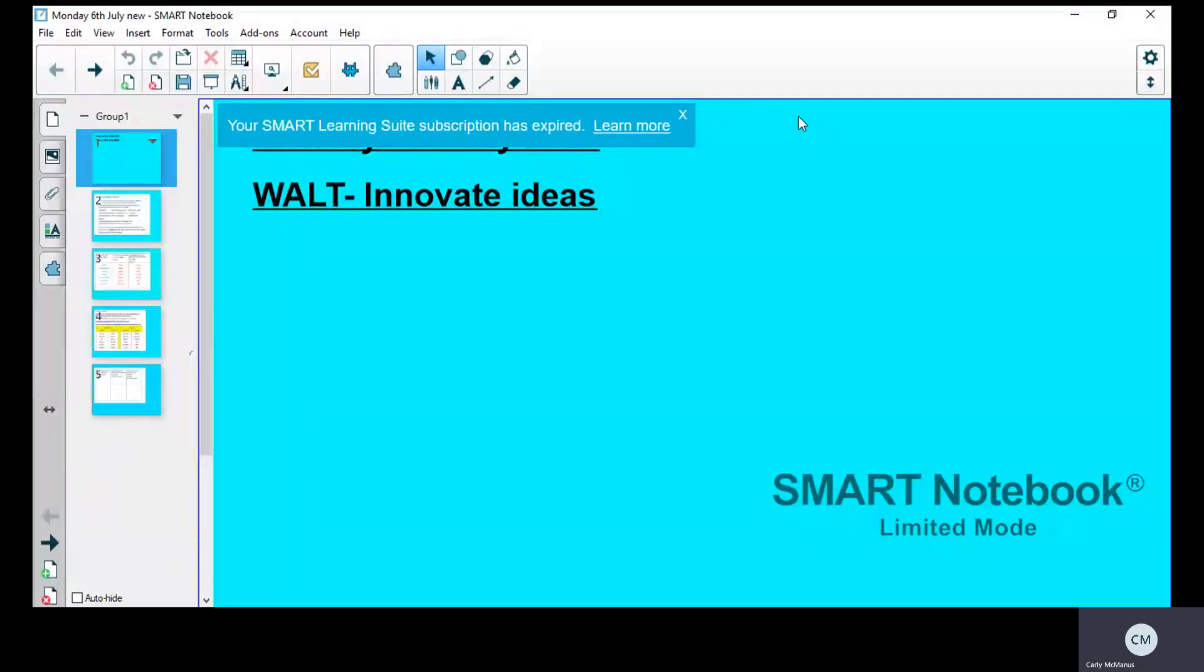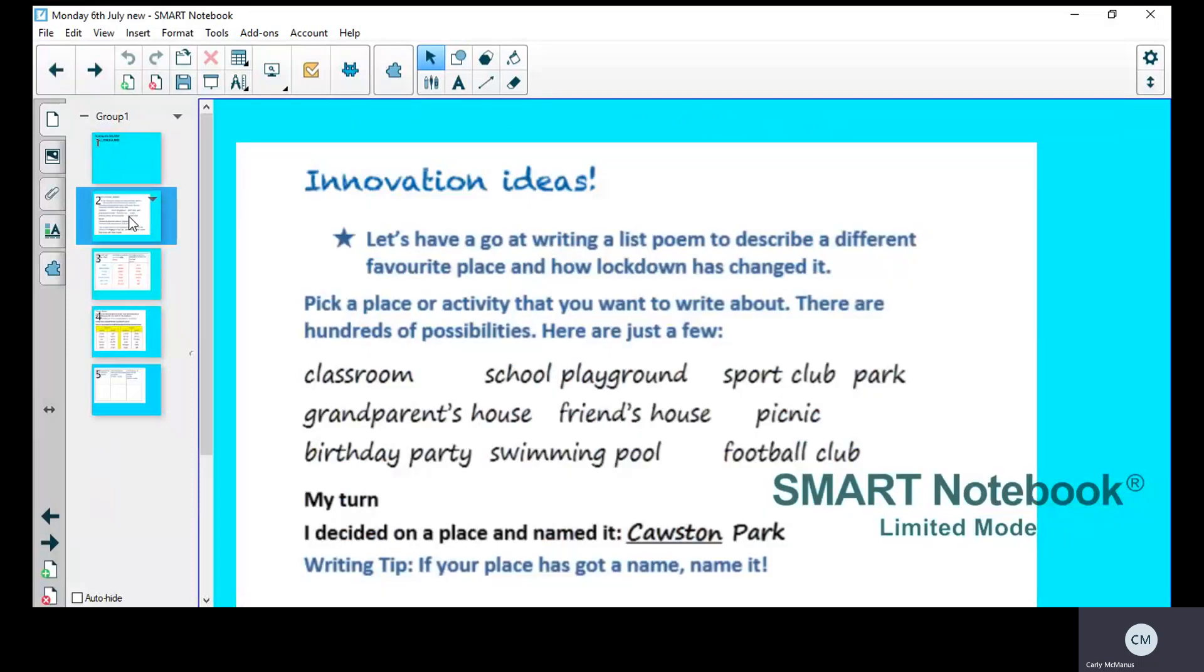Good morning Year 3 and welcome to Monday's lesson. We have been looking at a poem to do with a park and what it was like before lockdown and during lockdown. Today we are going to start planning some of our ideas. Let's have a go at writing a list poem to describe a different favourite place and how lockdown has changed it.